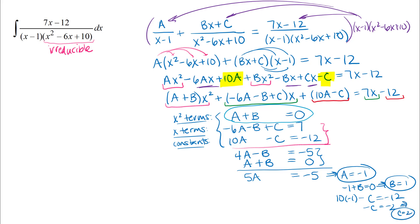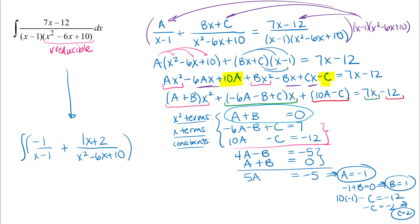So I've done my partial fractions work and found A, B, and C. I can now rewrite the original integral. The integral of negative one over x minus one, plus x plus two over x squared minus 6x plus 10, all with respect to x.